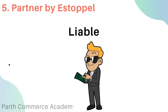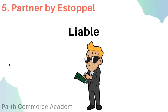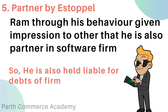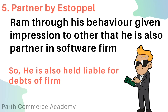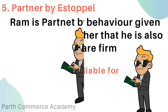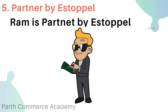Based on this negotiation, Ram is also liable for repayment of such debts like other partners. Here, Ram through his behavior gave an impression to Mohan Traders that he is a partner in the software firm. So he is held liable for the debt of the firm because in the eyes of Mohan Traders he is a partner. Ram is therefore considered as a partner by estoppel.